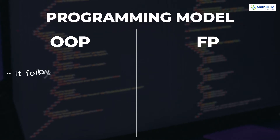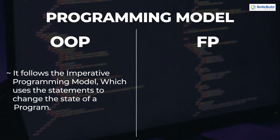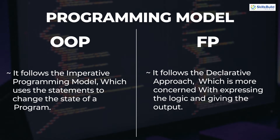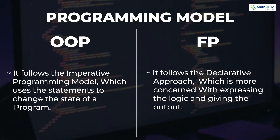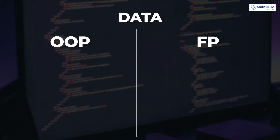Now let's talk about the programming model. Object oriented programming follows the imperative programming model, in which we use statements to change the state of the program. We use objects to manipulate data and change the state of our program. On the other hand, functional programming follows the declarative approach — it is more concerned with expressing the logic and giving the output without concerning itself with how things are taking place. So OOP is concerned with 'how' and functional programming is concerned with 'what'.